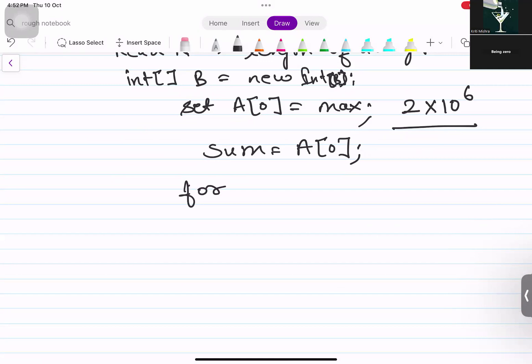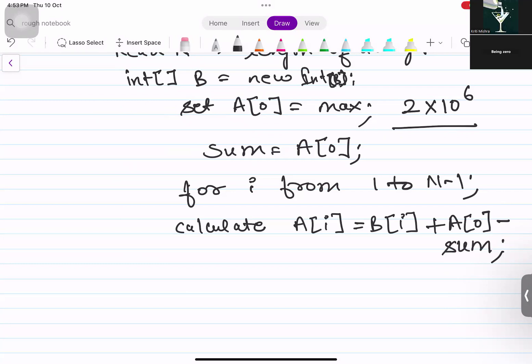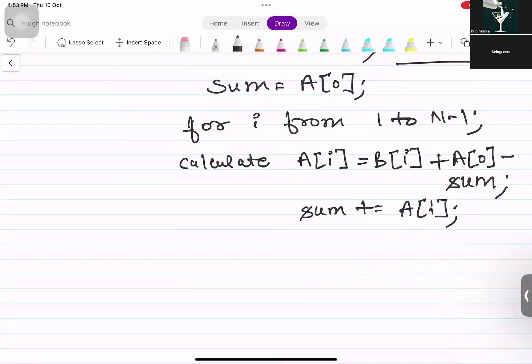Now we will start a loop for i from 1 to n-1. Now we need to calculate using the formula which we have computed previously, which is a of i is equal to b of i plus the first element in array a minus the sum. We have to calculate this in every iteration and add a of i to the sum. Update your sum.